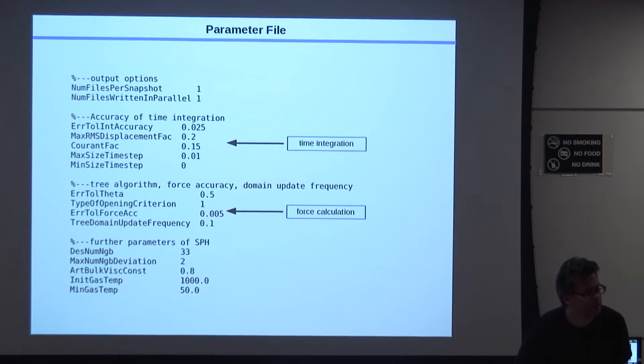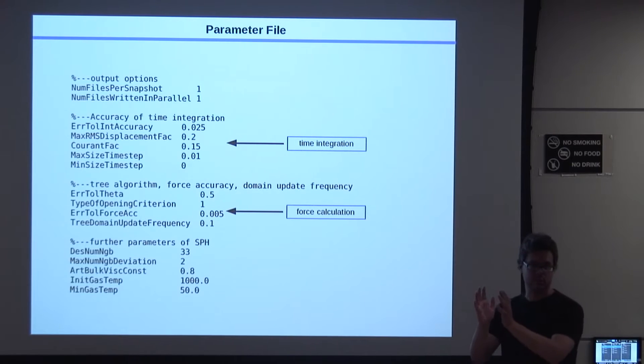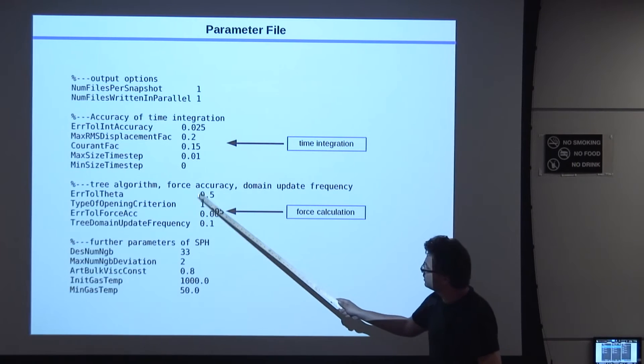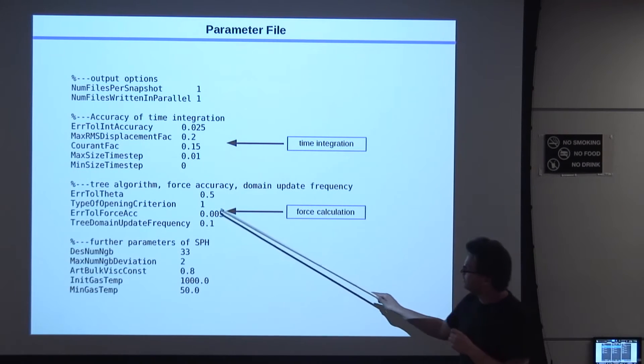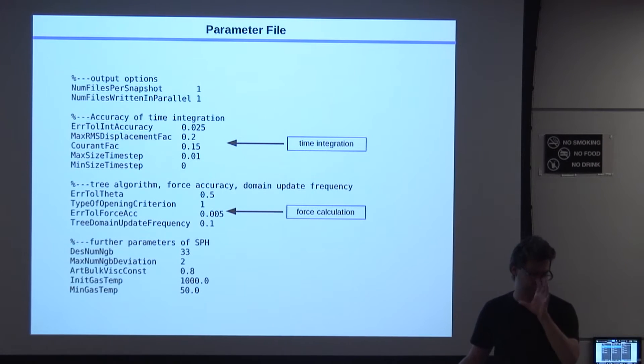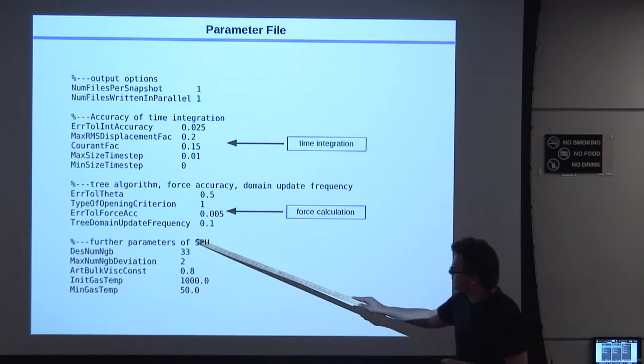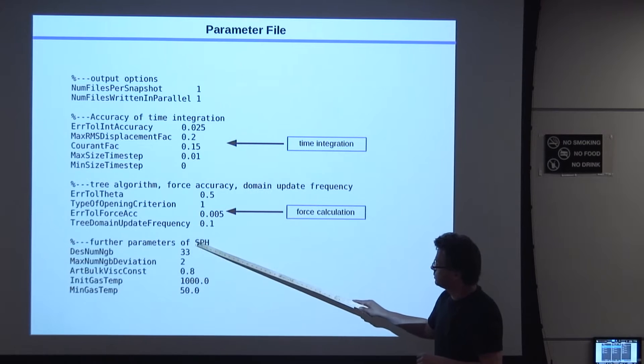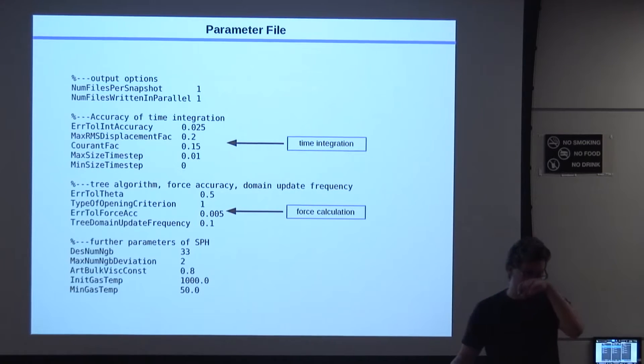Then you have here the tree algorithm, all the features of the tree algorithm. Does anybody know what this error tolerance theta here is? It's a tolerance for the tree. The tree is only opened if you have nearby particles. And essentially, that thing controls, if you make it smaller, you open the tree more often essentially. So it just regulates how often you open the tree.